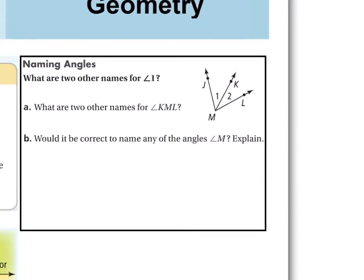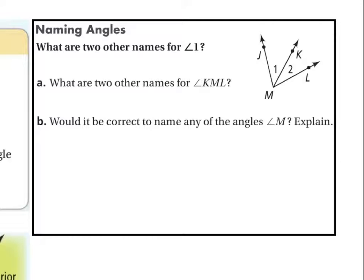Let's practice naming angles. We want to know two other names for angle one. First, identify which angle is angle one — the number one is inside that little angle. So that is angle one. One name would be angle J-M-K: make sure you put the angle symbol out in front. J-M-K is a perfect way of naming that angle. Notice the vertex M is in the middle.